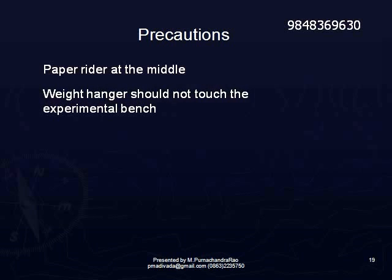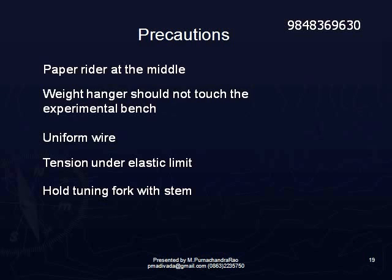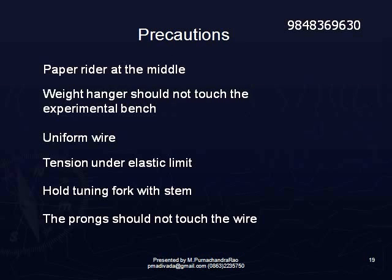Some precautions to be followed while doing the sonometer experiment: the paper rider must always be at the middle of the two bridges. The weight hanger should not touch the experimental bench. The wire should be uniform in radius — a uniform wire should be selected. The tension created should not exceed the elastic limit of that wire. Hold the tuning fork always with its stem — you should not touch the prongs, nor should the prongs touch the wire. Keep the tuning fork on the sonometer such that the prongs do not touch the wire.